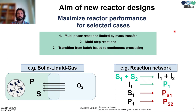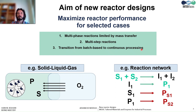So, if we try to summarize, the aim that new reactors should have is to maximize the reactor performance in a specific case where a need is identified. Here we have three potential selected cases. One is multiphase reactions limited by mass transfer. Second is where multi-step enzymatic cascades are to be implemented. And third, it is to fulfill the call to move from batch to continuous processes.